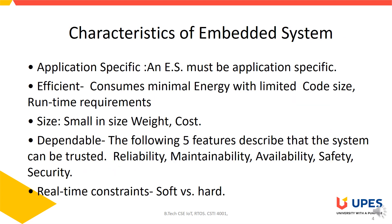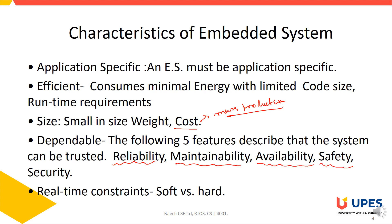An embedded system should be small in size as well as weight, and the cost should also be minimal due to mass production — for example, in a lift or washing machine. It should be dependable, meaning it should be reliable, maintainable, with high availability. It should be safe and secure, since it is used for controlling and monitoring purposes.